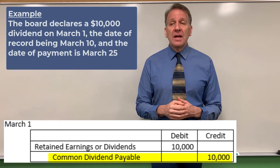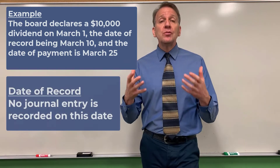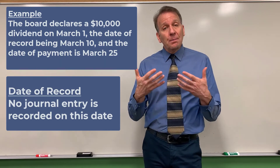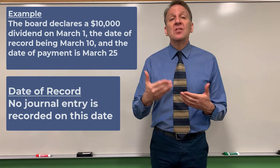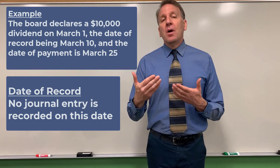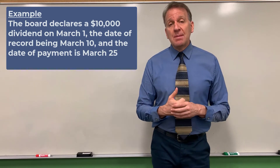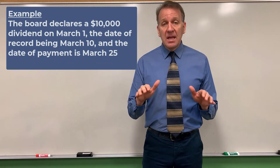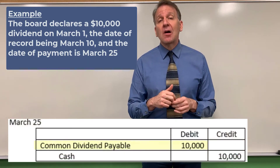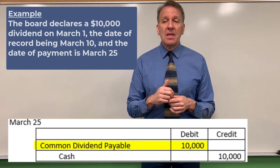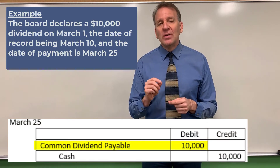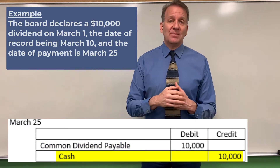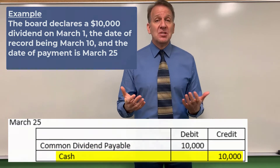The date of record is March 10th — whoever owned the shares at the end of that day are the ones who will receive the dividend. Then on March 25th, the date of payment, we eliminate that liability: we debit common dividend payable $10,000 and credit cash $10,000, because we're actually paying the dividend out. That's a cash dividend.